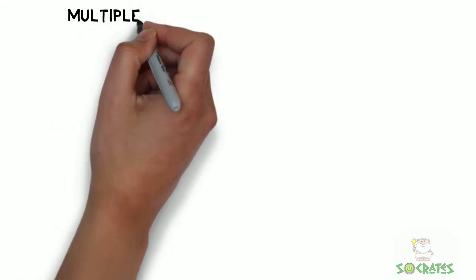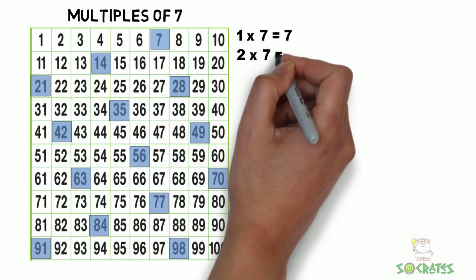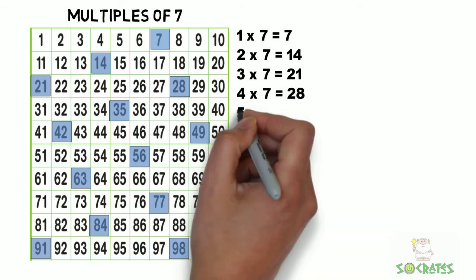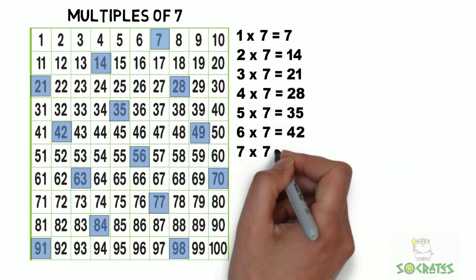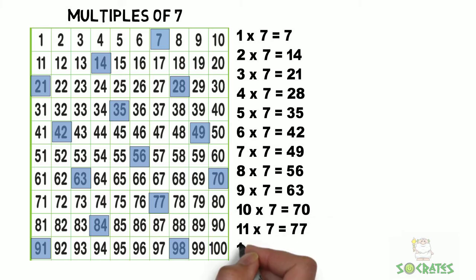Let's look at the patterns for multiples of seven. Look at the pattern they make on the hundreds chart. And then the answers increase by seven with each time you multiply that number.